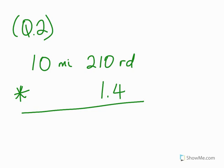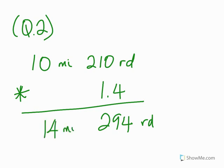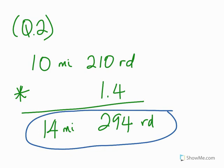Question 2: 10 miles 210 rods times 1.4. You do 210 times 1.4, and that gives us 294 rods. So you ask yourself: what is the relationship between miles and rods? One mile is 320 rods. We have 294 rods, so 294 rods is less than 320 rods, so we are fine — we just write 294 rods. Then we do 10 miles times 1.4, and that gives us 14 miles. So our answer becomes 14 miles 294 rods.